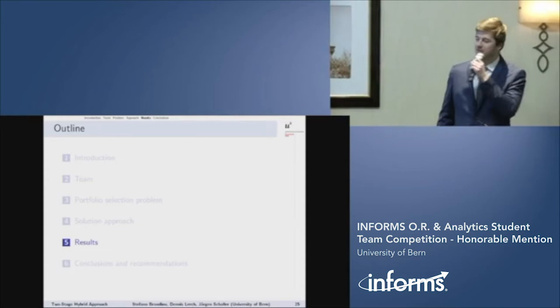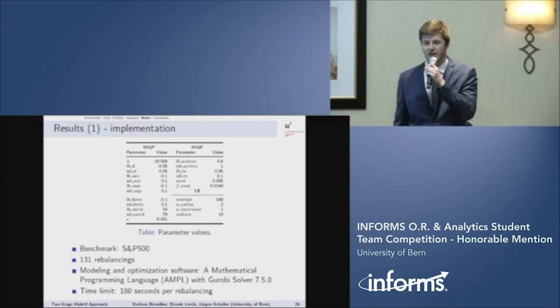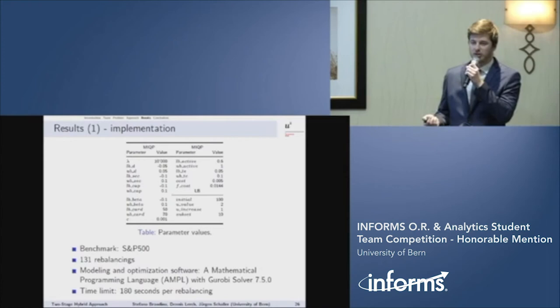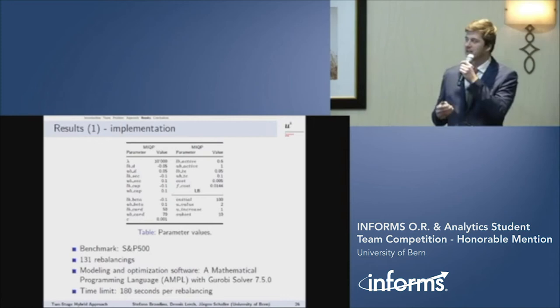So now, let me report to you the most important insights about our implementation and the results of our approach. Most of the parameter values as well as the benchmark, the rebalancing points and the time limit of three minutes were given already by the problem statement itself. However, we were free to choose the value of additional parameters of our model as well as the lambda value. As you can see, we choose a rather large lambda value since we noticed that for smaller values, it happens from time to time that the tracking error of the portfolio lies under the 5% threshold. We implemented and performed our optimization by using the AMPL software and to run it with the Gurobi solver.